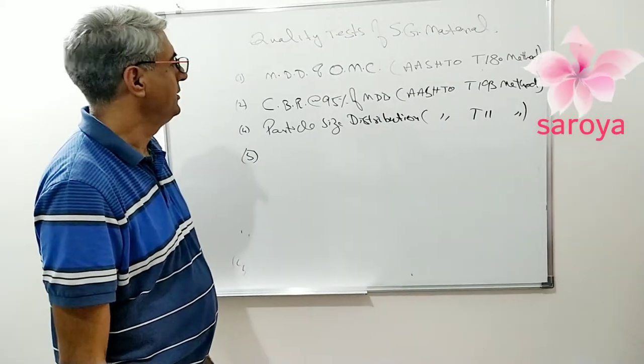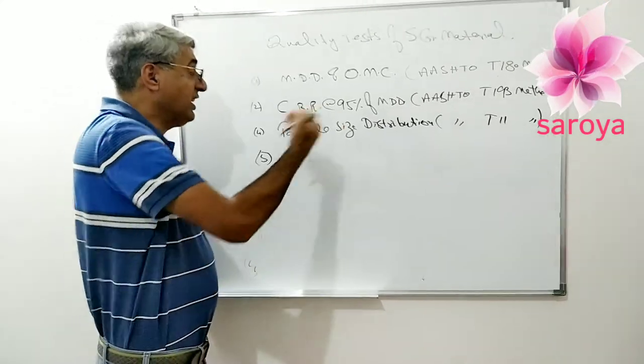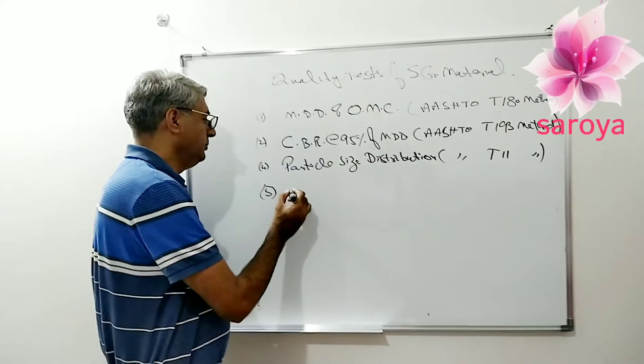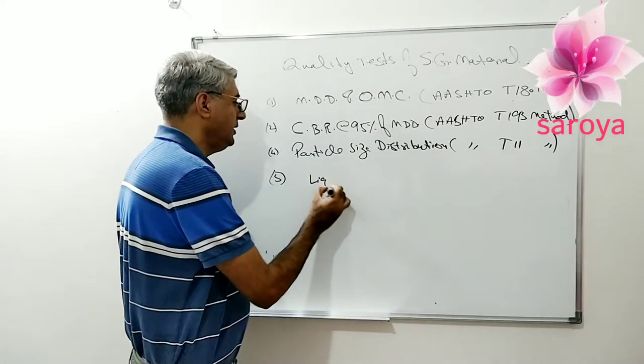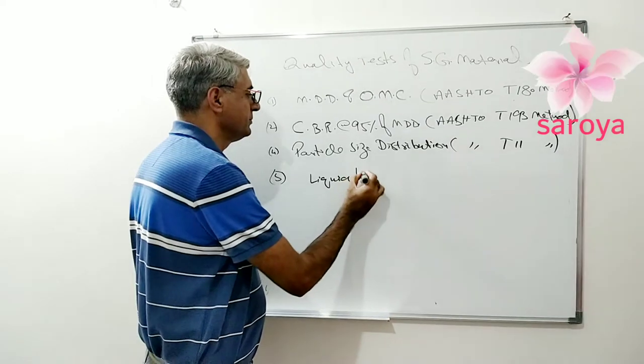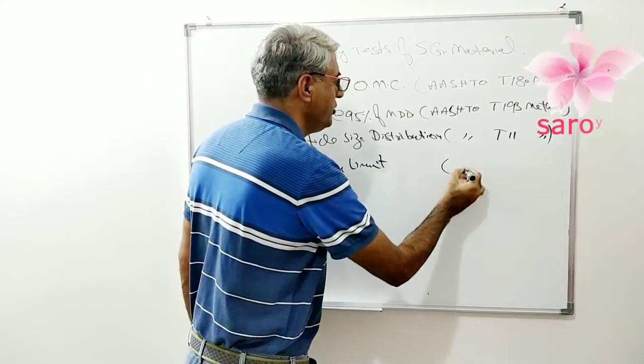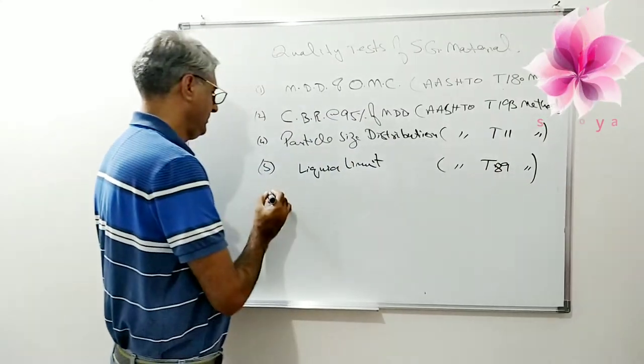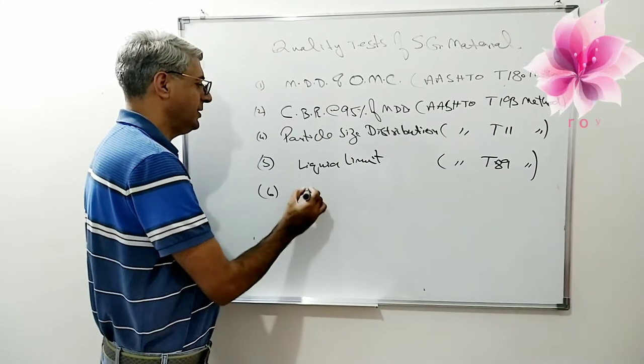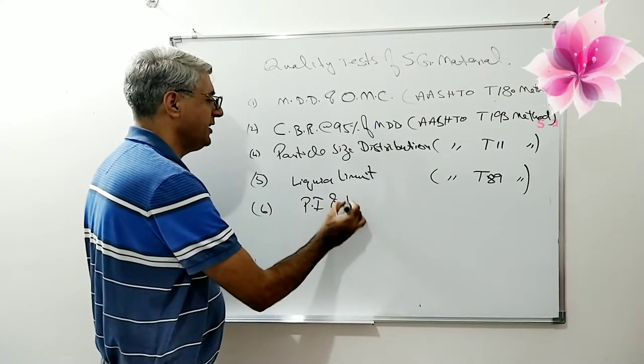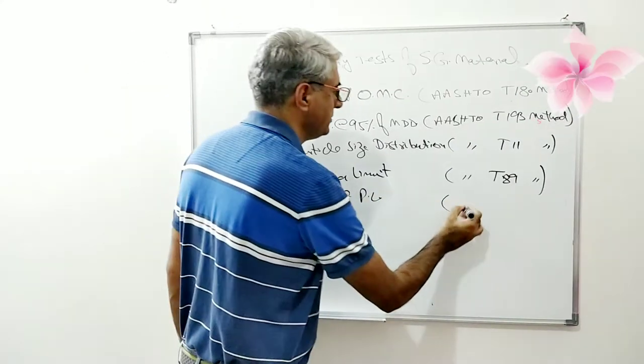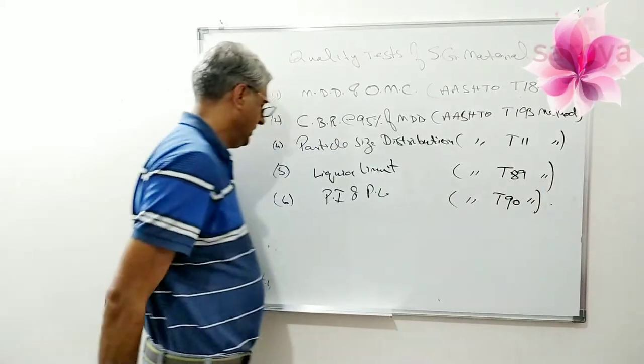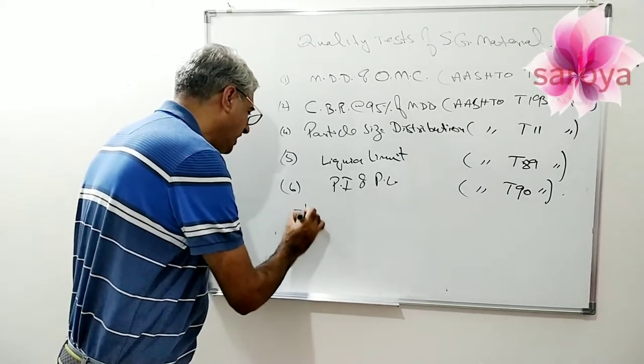Next, another very important test which is used to conduct in order to find out the amount of the clay we have fine, we will find out liquid limit by AASHTO T89 method. Next, plasticity index and plastic limit, T90 method.